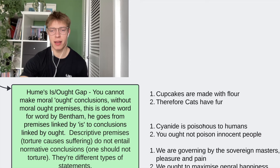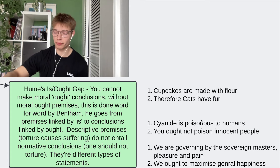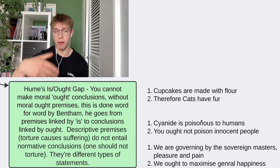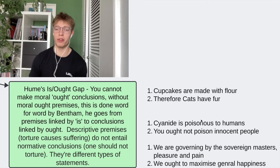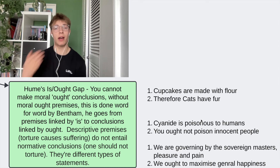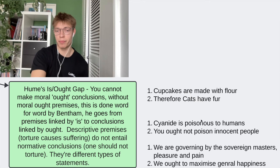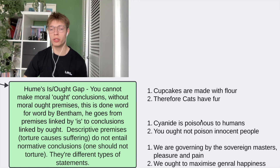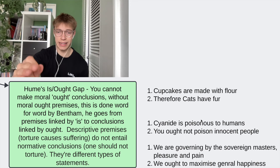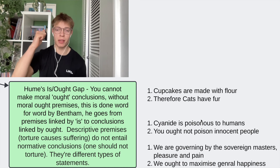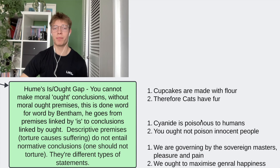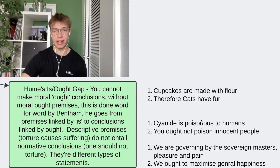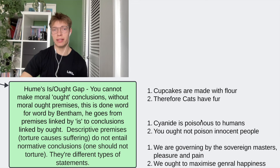Now let's apply this specifically to utilitarianism. Bentham argues that we are governed by the sovereign masters of pleasure and pain — that's a fact of the world, or at least what he thinks is a fact. His conclusion is that we ought to be governed by these things and ought to maximize general happiness. But he goes from an 'is' statement — facts about the world — and then commits the Is-Ought Gap, concluding with 'we ought to.'